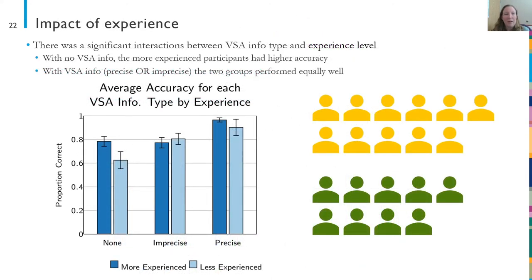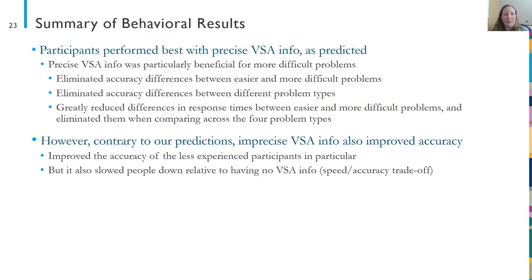We found a significant interaction between VSA information type and experience level. When there was no VSA information, the more experienced participants had overall higher accuracy than the less experienced participants. When VSA information was added — whether imprecise or precise — the difference between the two groups was eliminated. To summarize our behavioral results: participants performed best with precise VSA information as we predicted. This precise information was particularly beneficial for the more difficult problems, eliminating accuracy differences between easier and more difficult problems and greatly reducing differences in response times. Contrary to our predictions, imprecise VSA information was also helpful — it improved the accuracy of less experienced participants in particular — however, it also slowed people down, creating a speed-accuracy trade-off.